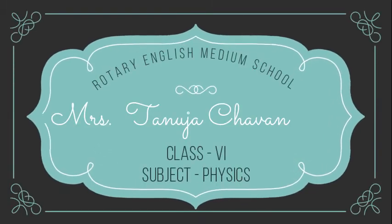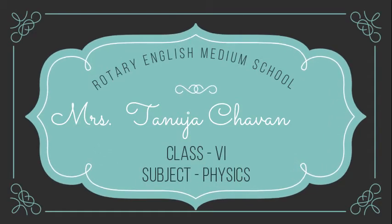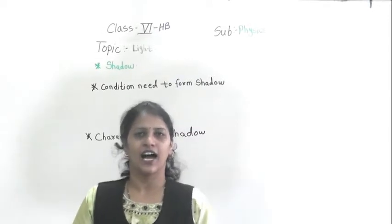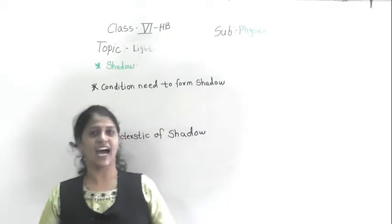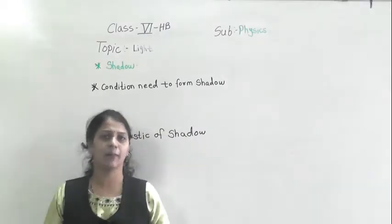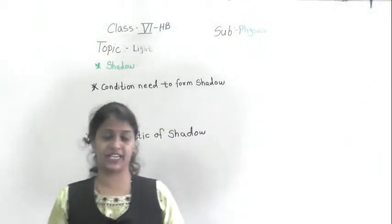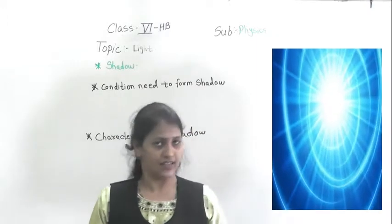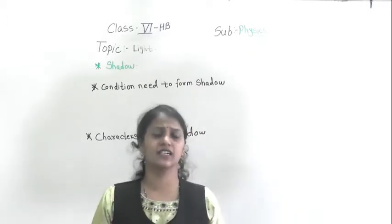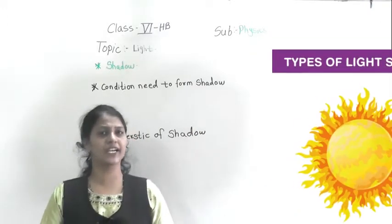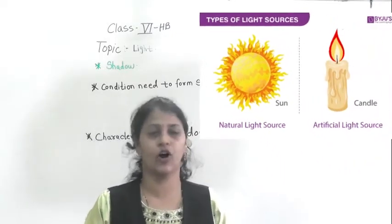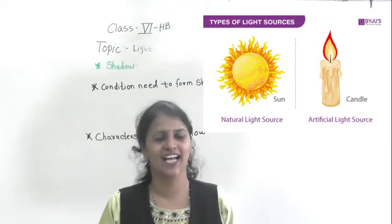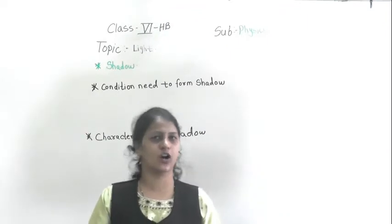Welcome to Physics Lecture. We are back with a physics lecture. In the last video we learned about the concept of light. We started the lesson on light and discussed that there are mainly two types of light: natural and artificial. Artificial is also called as an artificial source of light.